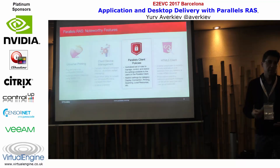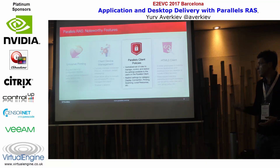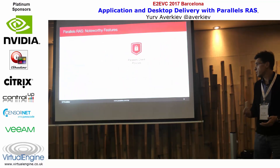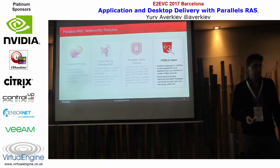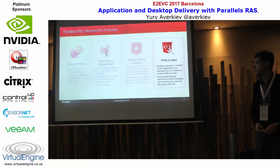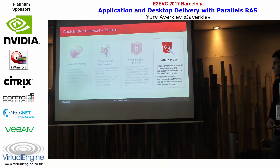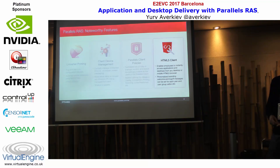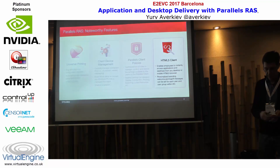Parallels Client Policies work similarly to GPO and allow you to enforce settings on the Parallels Client — the application users run to access published applications and desktops — preventing users from modifying those settings. The HTML5 client is the easiest way to get started with RAS: no need to deploy the Parallels Client to end users, just point the web browser and you're ready to go. It supports desktop and mobile browsers, and includes support for white labeling — you can create custom company branding with images, a color scheme, and assign it to a particular group of users.